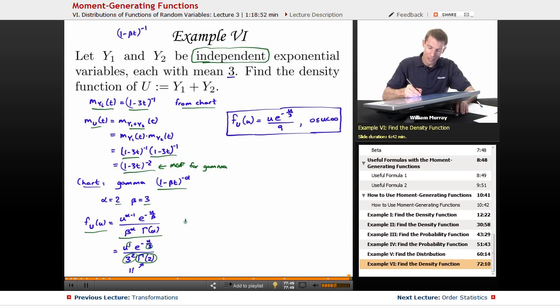Gamma function, remember that gamma of n is just n minus 1 factorial if n is a whole number. So gamma of 2 is just 1 factorial, which is just 1. And so I just simplified everything here, and I got down to u times e to the minus u over 3, all divided by 9, and that's my range for the gamma distribution is going from 0 to infinity.